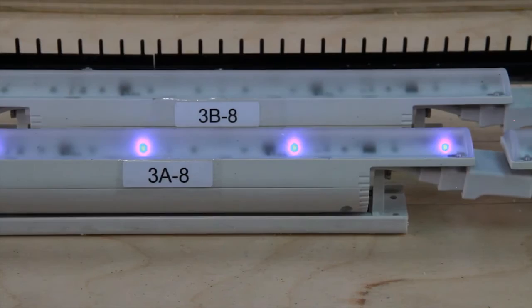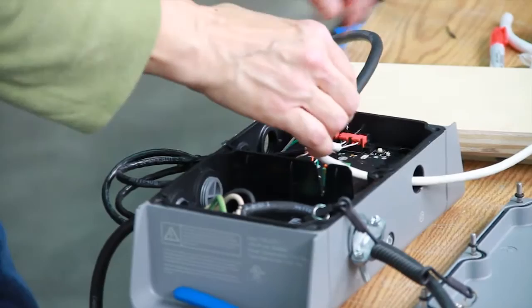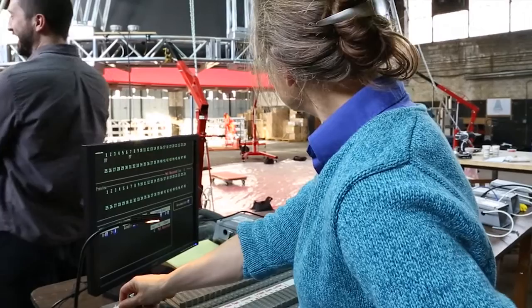Once we have the ring set up on the truss, then we wire up all the data enablers for each ring using DMX. And that's when we get an actual mixing board out there and can color mix and play with lights.